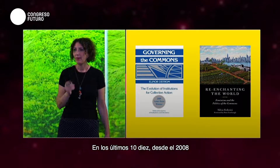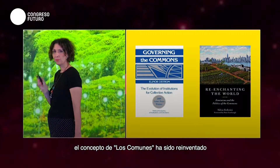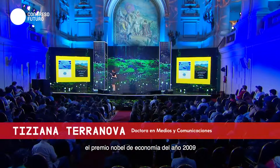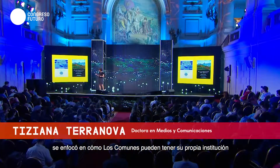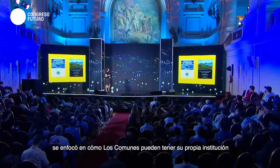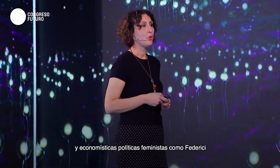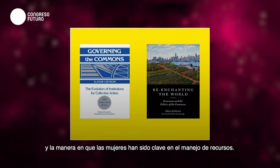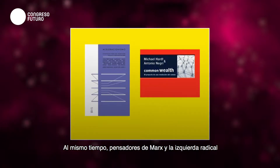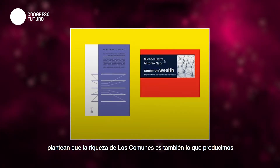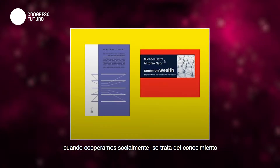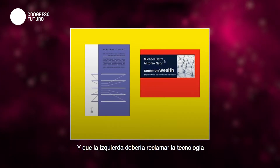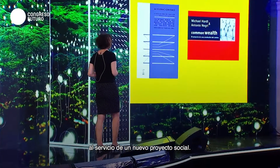There is an alternative. Over the past 10 years, after 2008, the concept of the Commons has undergone a kind of reinvention. The Nobel Prize winner in economics of 2009 focused on how the Commons — land owned in common — can produce its own institutions. Feminist political economists such as Federici have rediscovered the politics of the Commons and the way women have been central to dealing with Commons resources. Marxist thinkers and the radical left have also argued that the Commons is what we produce when we socially cooperate — it's about knowledge, and technology should be reclaimed at the service of a new social project.